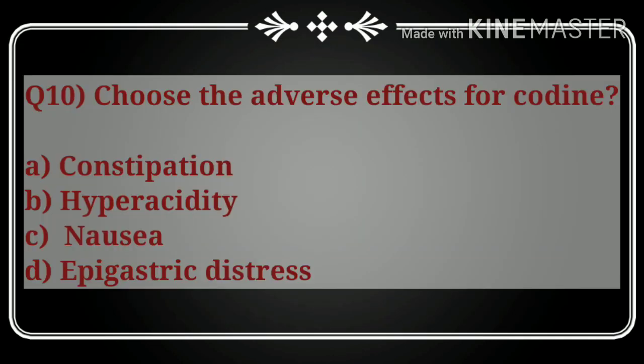Question number ten: choose the adverse effect of codeine. The options are: A) constipation, B) hyperacidity, C) nausea, and D) epigastric distress. The correct answer is option A, constipation. Constipation is the adverse effect of codeine.